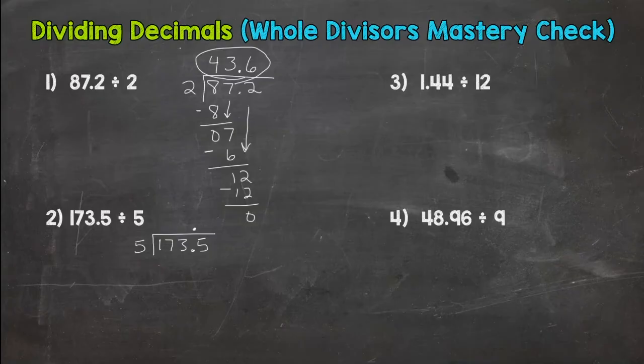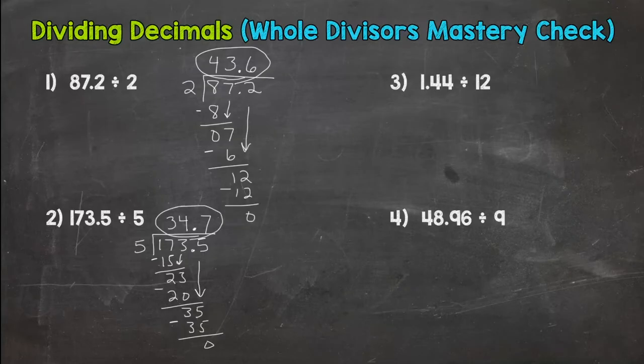And then we have to go to the 17. 17 divided by five, we can pull three groups of five out of 17. Multiply, we get 15. Subtract, we get two. Bring down the three. How many groups of five out of 23? Well, four. 20 is as close as we can get. Four times five is 20. Subtract, we get three. Bring down that five. And then 35 divided by five is seven. Seven times five is 35. And we get a zero.